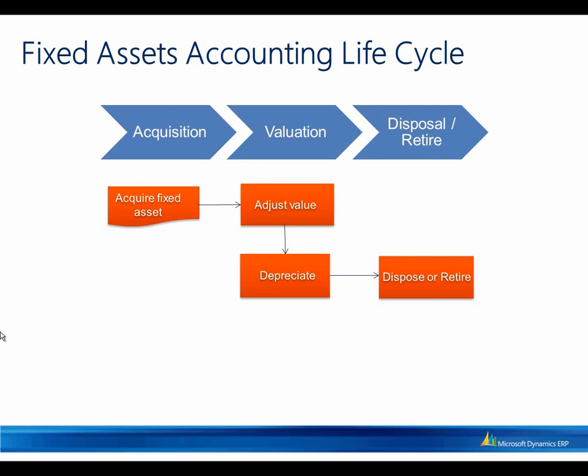The disposals of an asset by sale or scrap can be recorded in accounts receivable, general journals, or directly into a fixed asset journal, automatically generating the appropriate realized gain or loss from the disposal of the asset.